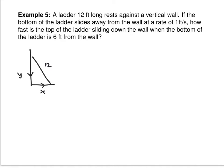What rate are you given? dx/dt — and that equals 1. We know that's positive because the X side is getting larger as the ladder falls. If we were given dy/dt, we'd note it's negative because that Y side is decreasing. What do we want? dy/dt, specifically when X equals 6.